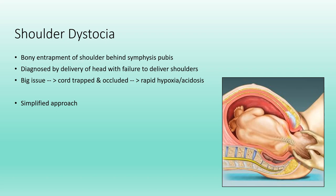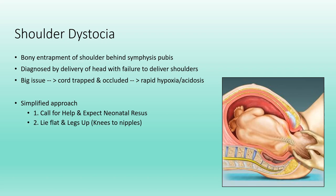Here's a simplified four-step approach to treat shoulder dystocia. Step one: call for help and organize the equipment, expecting a neonatal resuscitation. Step two: lie the woman flat and bring her legs up, knees to nipples — this flattens the lumbar lordosis and gives the baby more room to be delivered. Step three: place suprapubic pressure, initially in a constant fashion, then in a CPR-like rocking motion if initial attempts are unsuccessful.